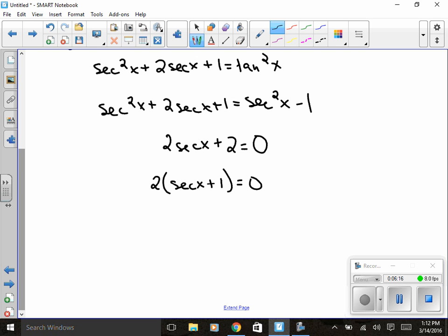Set it up again. Secant x plus one has to equal zero. Let's track that one. Secant x equals negative one.